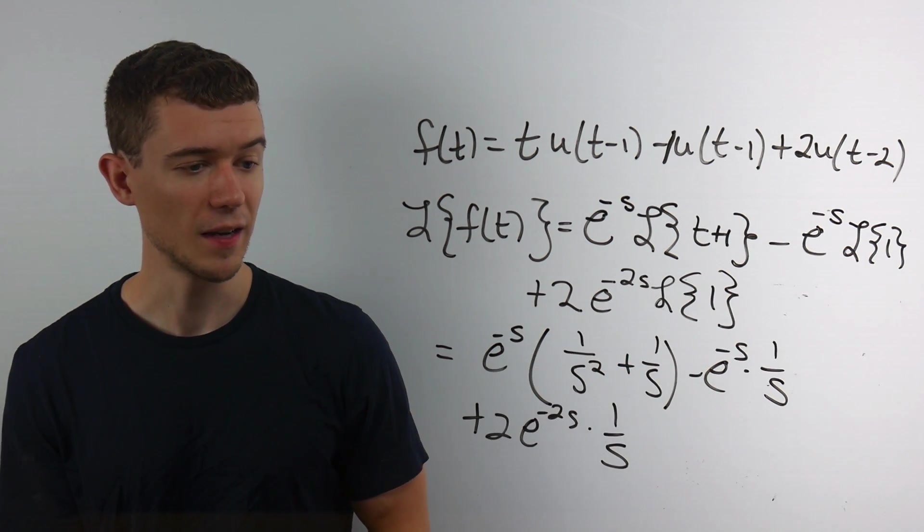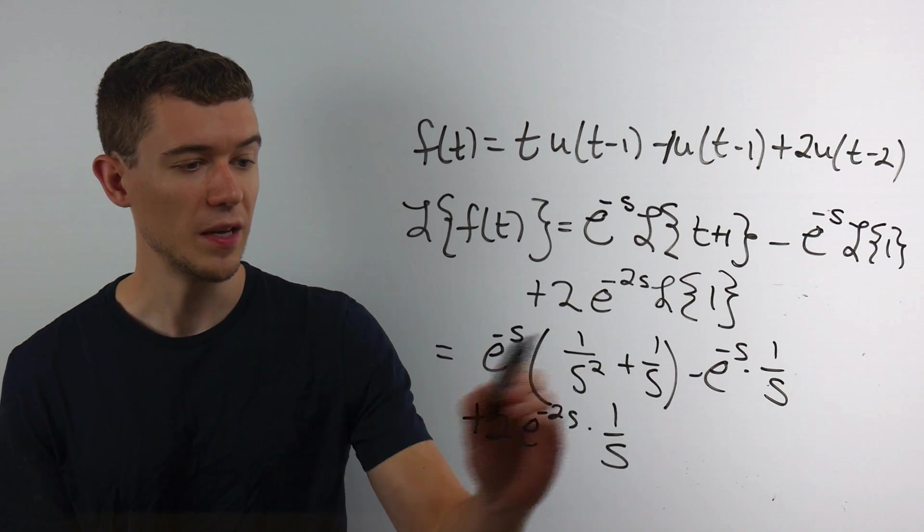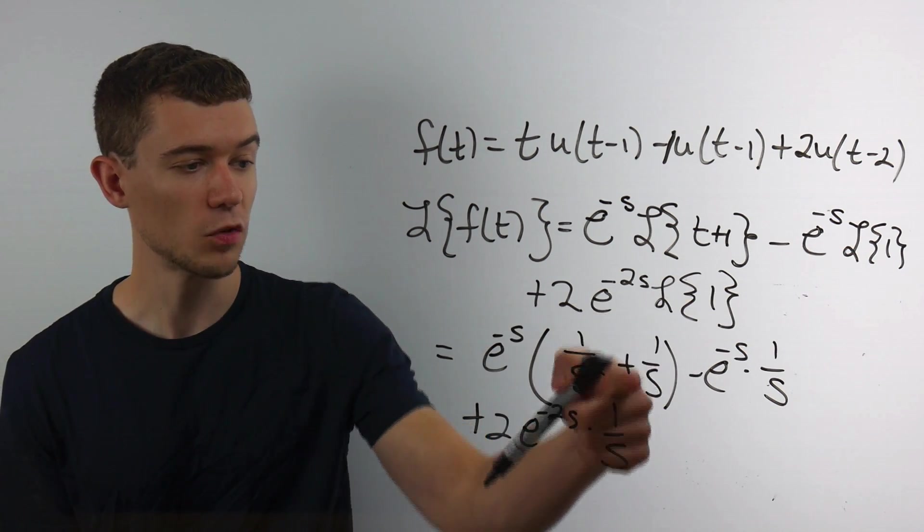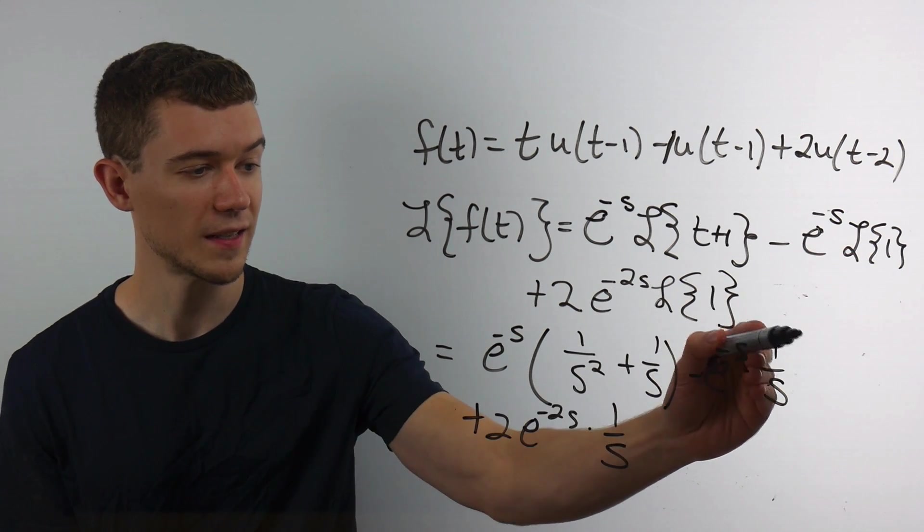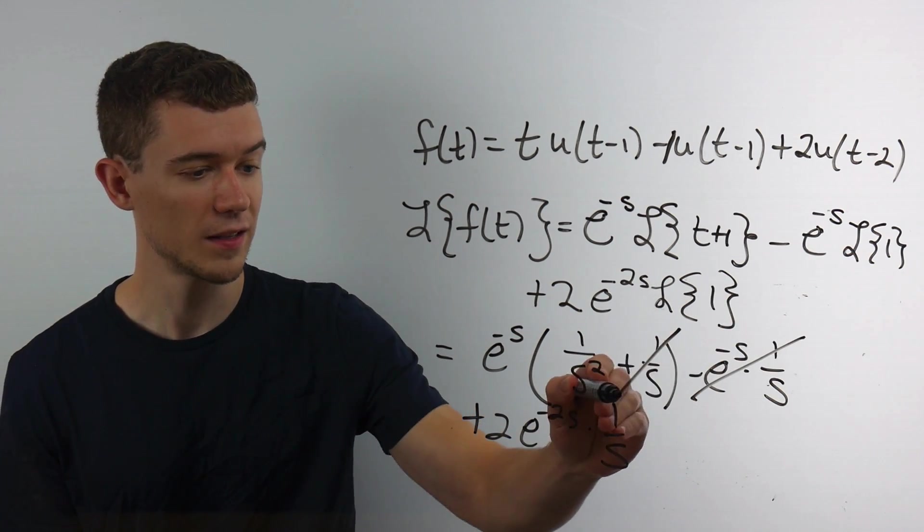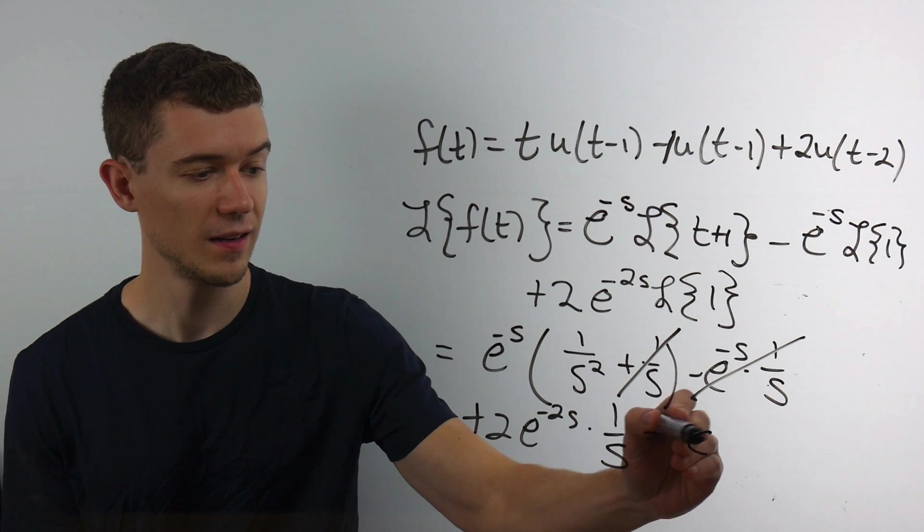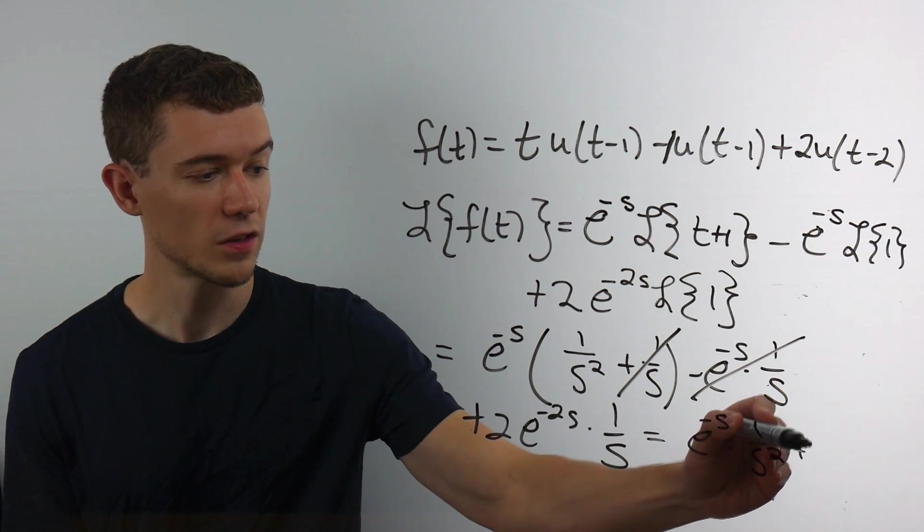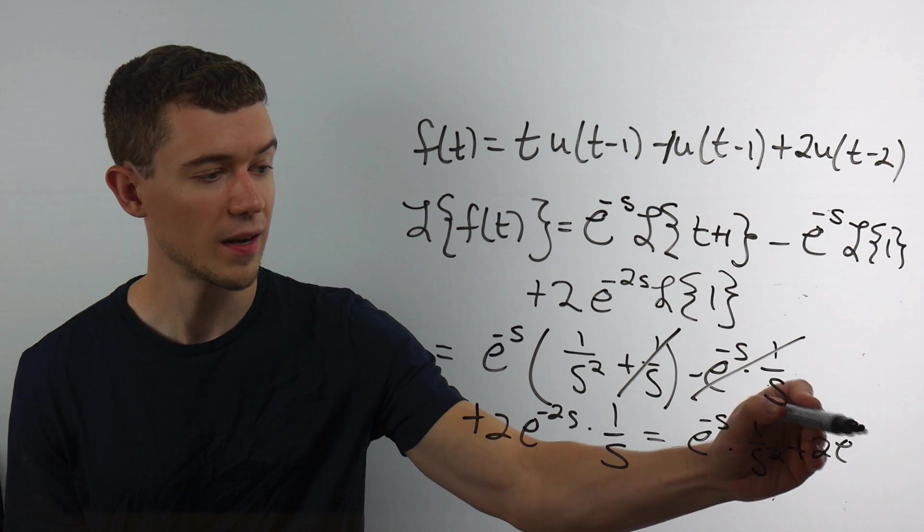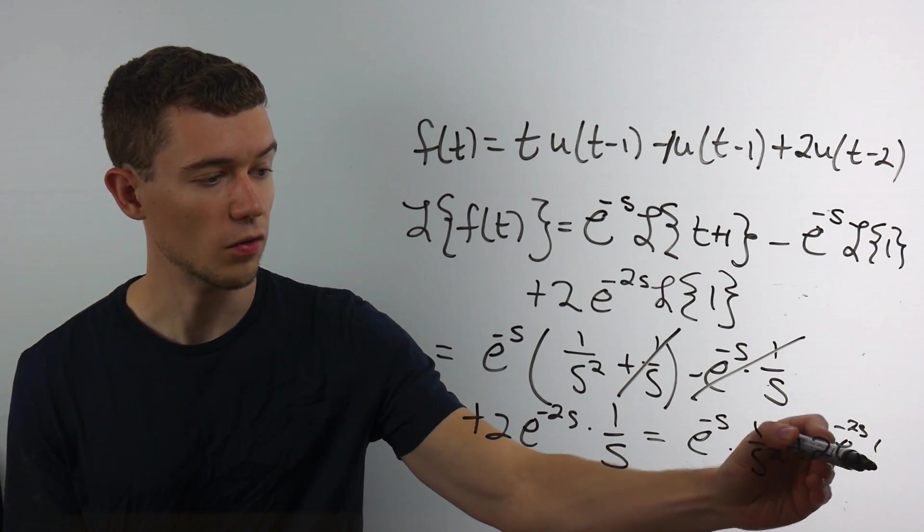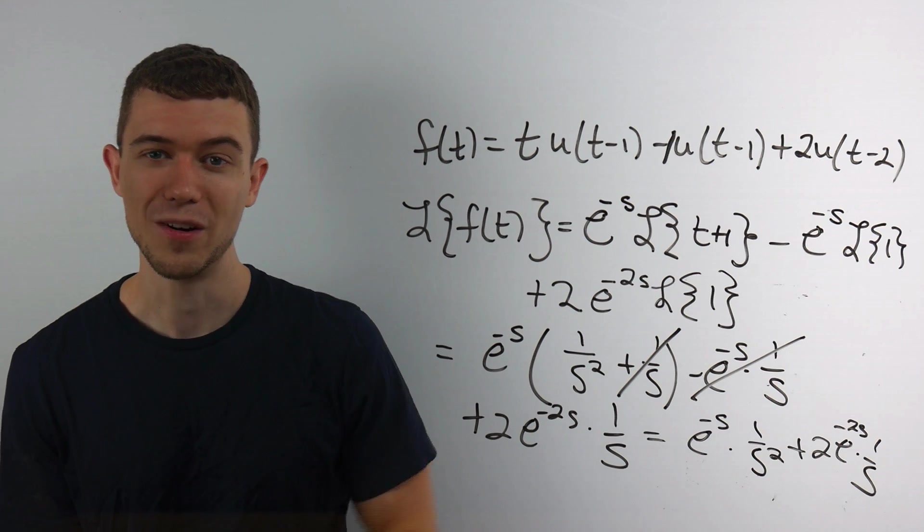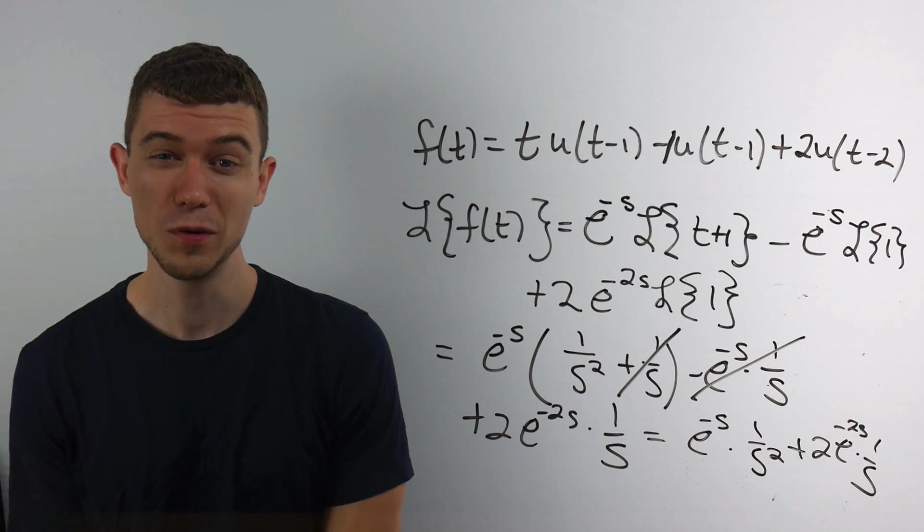And then you could probably clean this up. It looks like since both of these terms have e to the minus s attached, and I have a plus 1 over s minus a 1 over s, this term will cancel with this term. I think we're just going to have e to the minus s times 1 over s squared plus 2 e to the minus 2s times 1 over s. It looks like that's the Laplace transform of that original piecewise thing we were given.